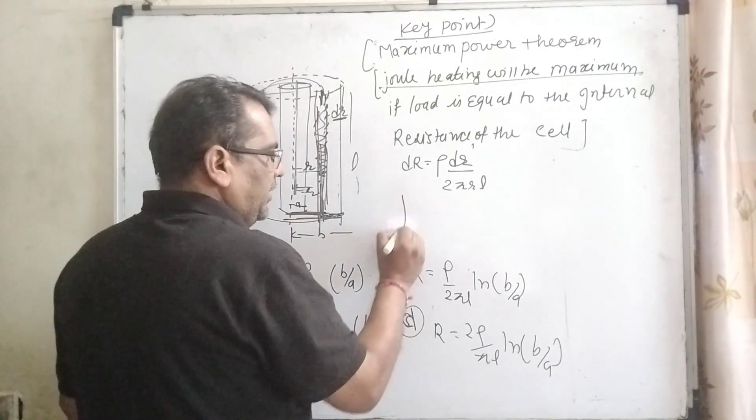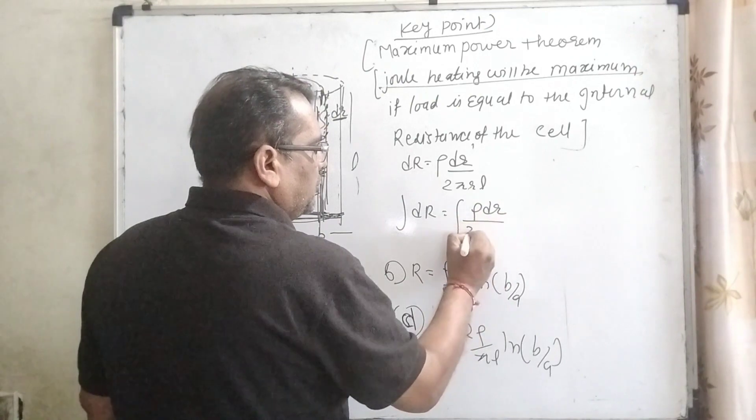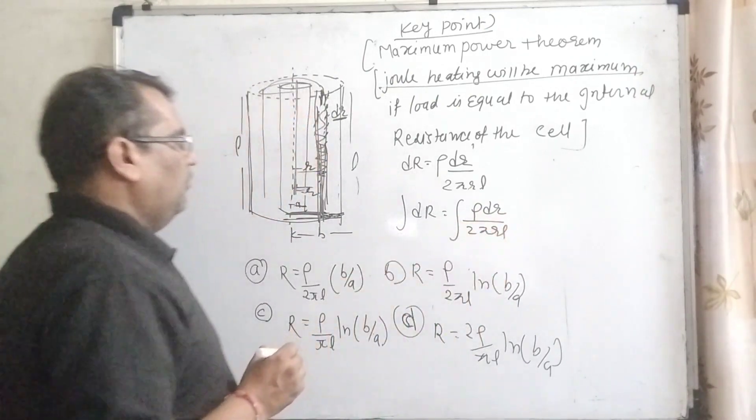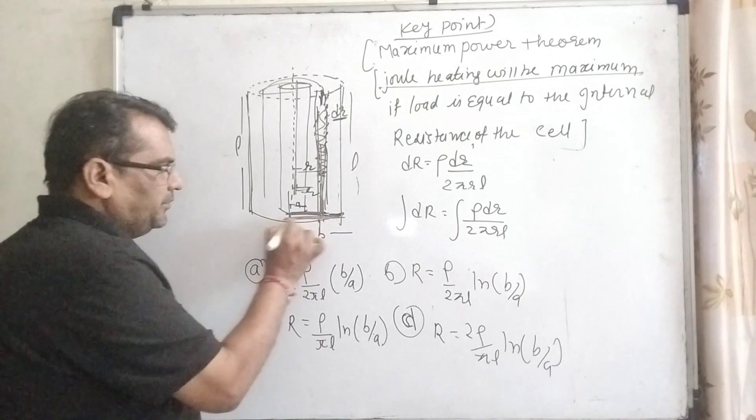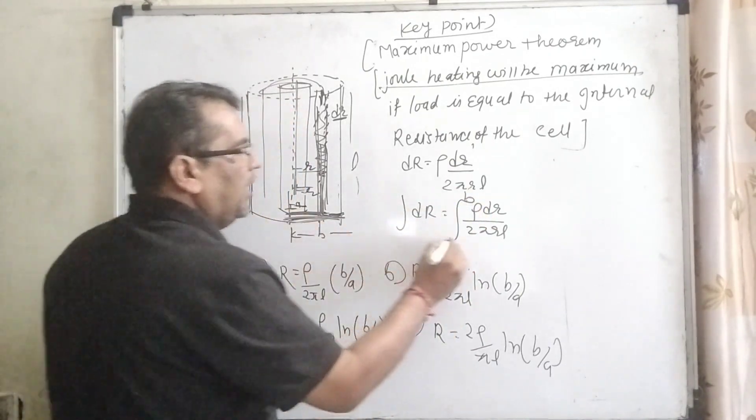Now we have to integrate: dR equals rho dr upon 2πRL. What is the upper limit? Here total radius, the bigger radius is B and the smaller part is A.